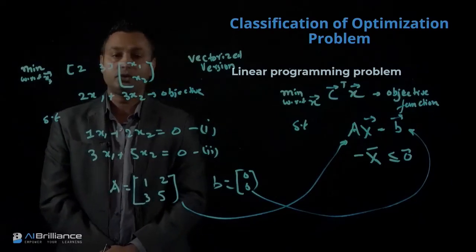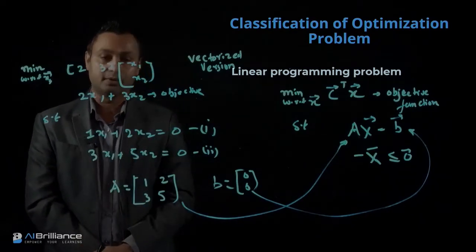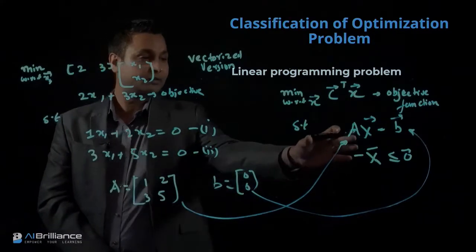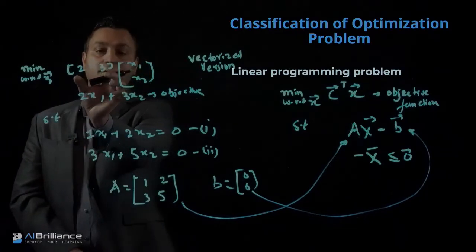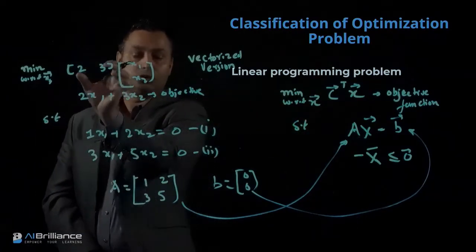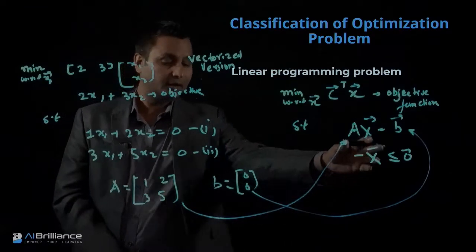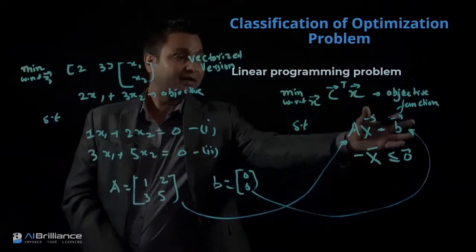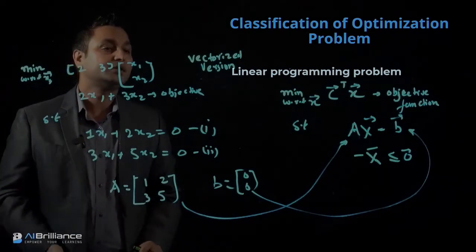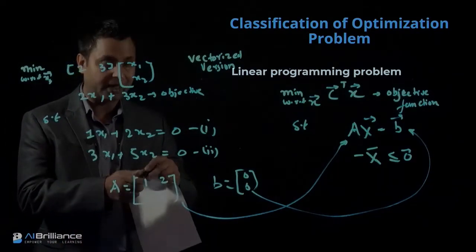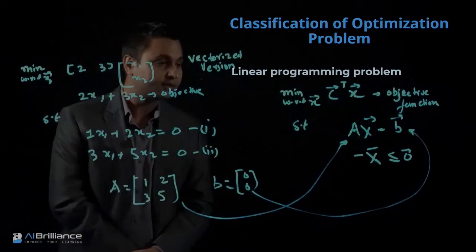From there, I can substitute this A and this b into the vectorized format, and that is how I write these two equations in matrix and vector form. So hopefully you see that something like this can be written in two different ways: index format and vectorized format. In this example, c equals [2, 3], A equals [1, 2; 3, 5], and b equals [0, 0]. That represents a linear programming problem, and the vectorized version is what I showed in this example.